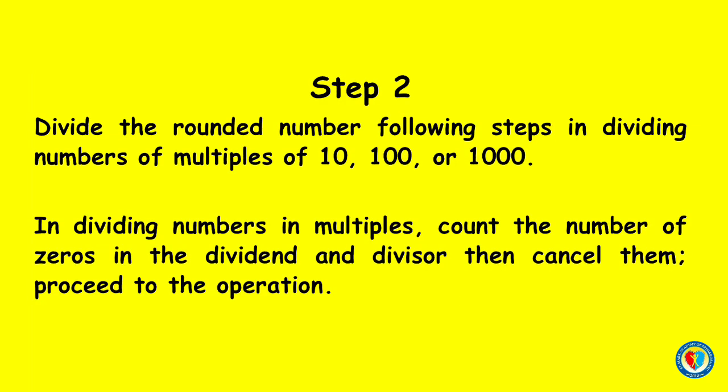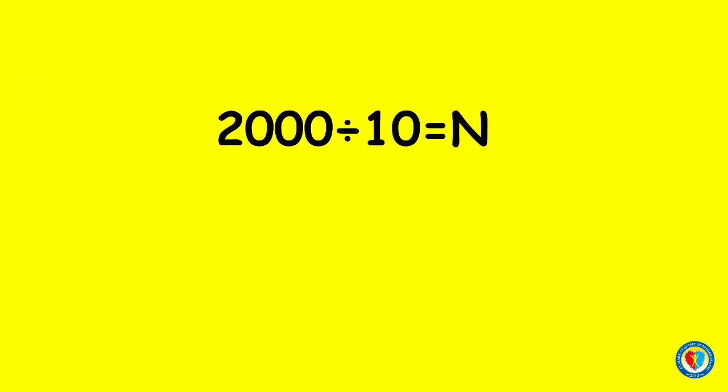Step 2: Divide the rounded number following the steps in dividing numbers of multiples of 10, 100, or 1,000. In dividing numbers in multiples, count the number of zeros in the dividend and divisor, then cancel them. Proceed to the operation. Let's write 2,000 then divide it by 10. Simply cancel one zero at the end of the numbers.